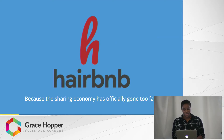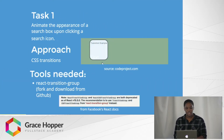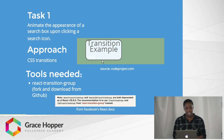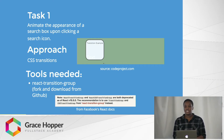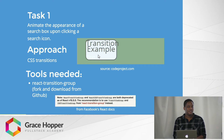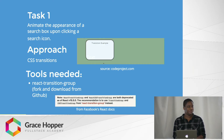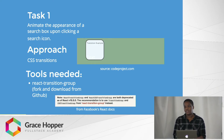So for our first task, we are going to animate the appearance of a search box, a search form, upon clicking a search icon. For this, we're going to use CSS Transitions. And so we're going to need Facebook's React Transition Group. It's not an NPM package, but you can fork it and download it from GitHub.